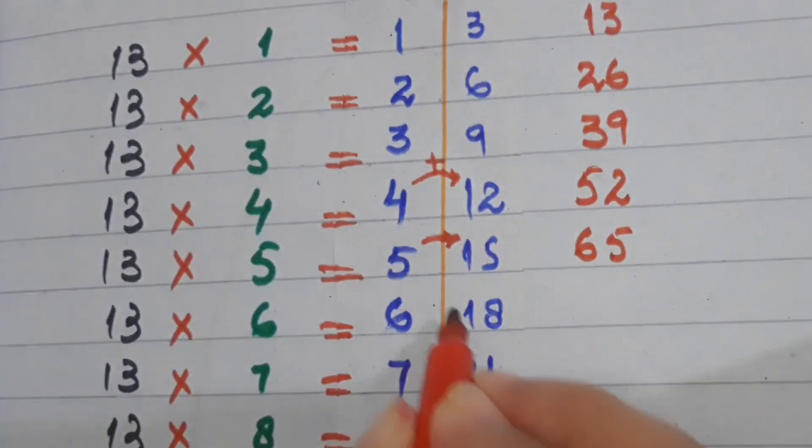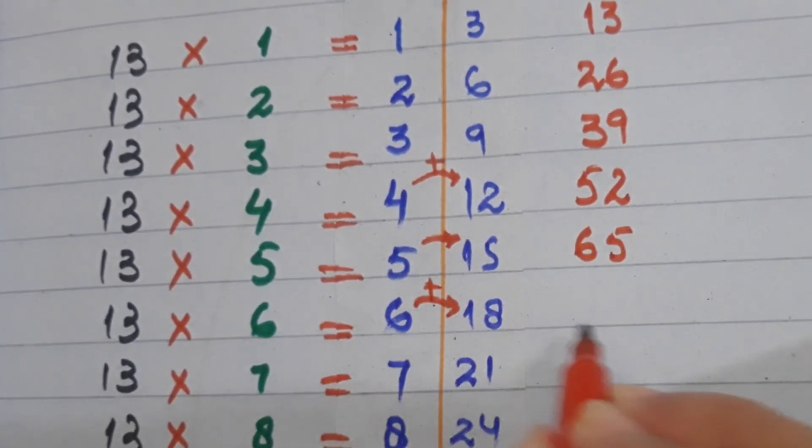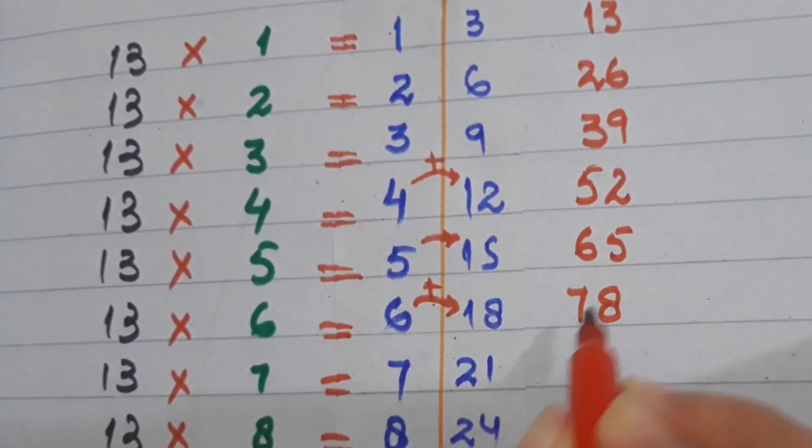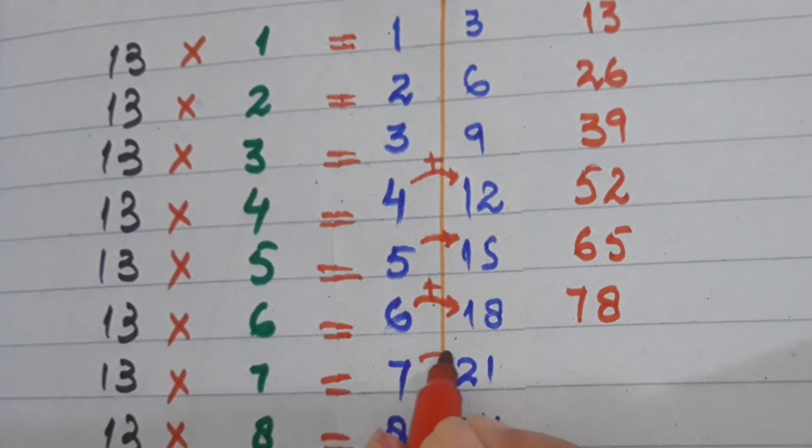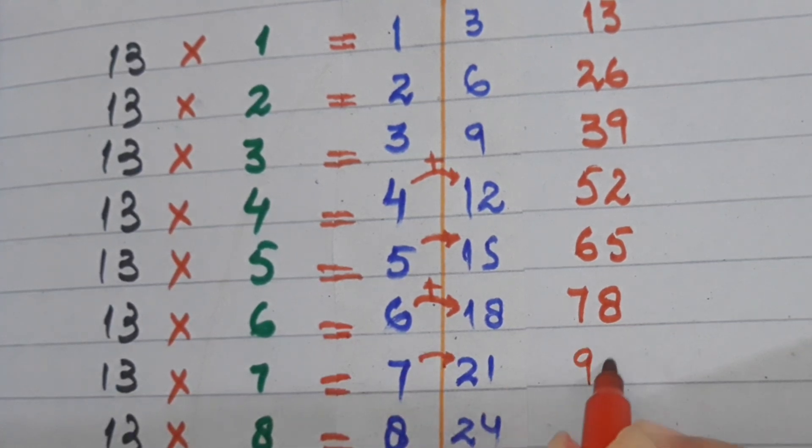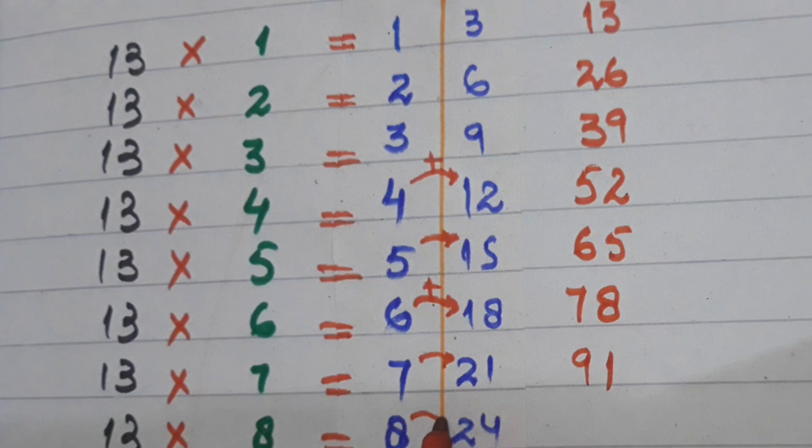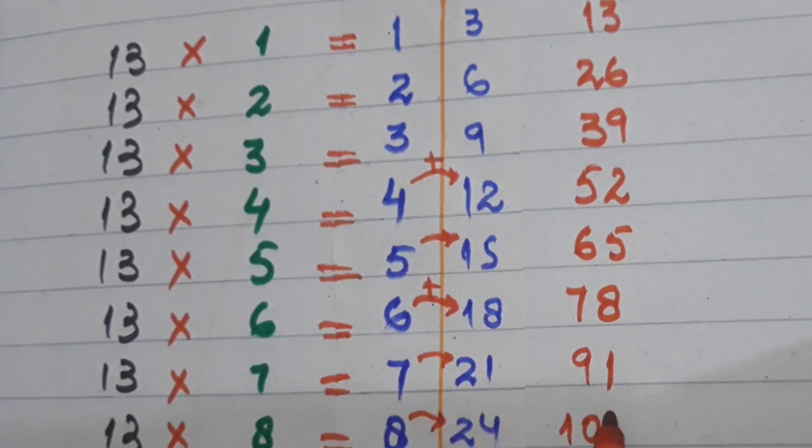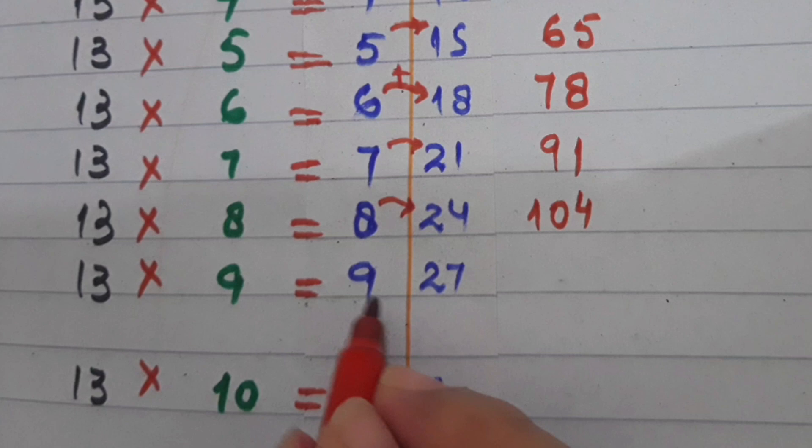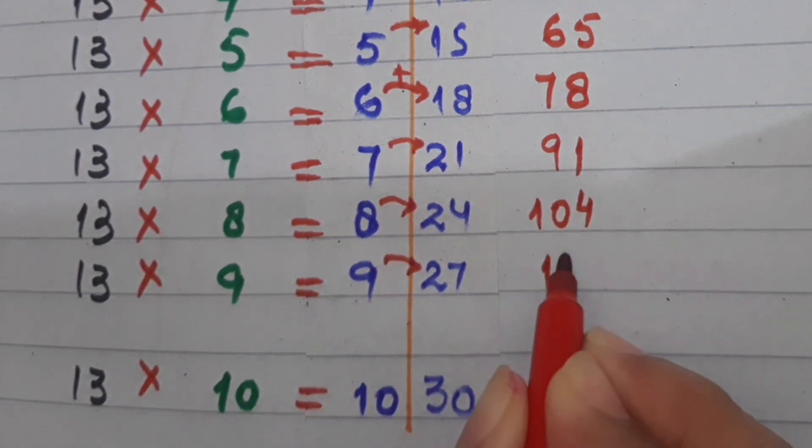Similarly, 5 plus 1 is 6, 5 will be written as it is. 6 plus 1 is 7, and 8 will be written as it is. Now 7 plus 2 will be 9, and 1 will be written as it is. Similarly, 8 plus 2 is 10, and 4 will be written as it is.